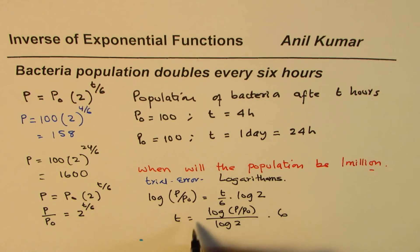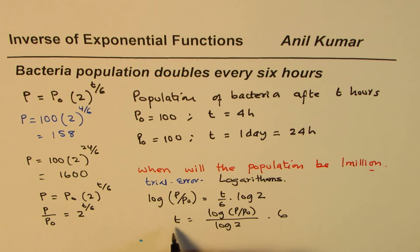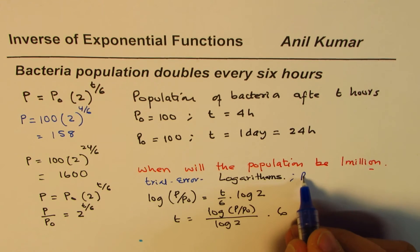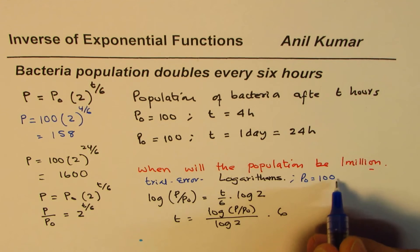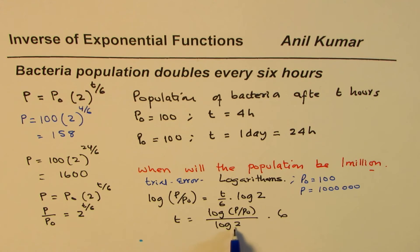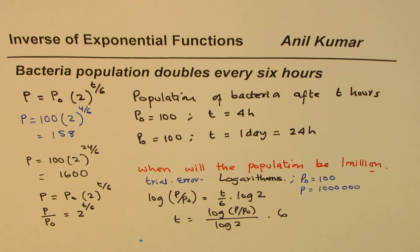So that equation really gives you the value of time t when we want to know what population is going to be. So in this equation, as you know, we know P0 is 100. We have P0 equals to 100, we want P to be 1 million, so that is 1000, 1000. Log 2 we can calculate with calculator.